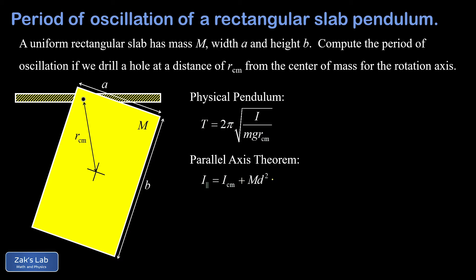Next we need a reminder of the parallel axis theorem, which tells us how to compute the moment of inertia of an object about an axis parallel to an axis passing through the center of mass. To emphasize the two axes: I can look at an axis passing through the center of mass of this rectangular slab and pointing perpendicular to the plane of the slab — that's what we call I_cm in the parallel axis theorem. The actual physical rotation axis is up near the corner where we drill the hole.